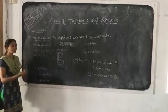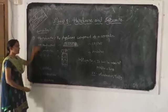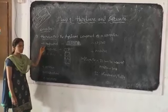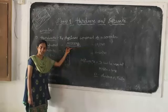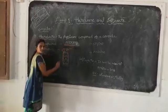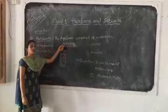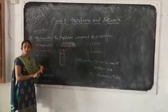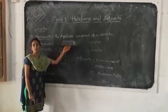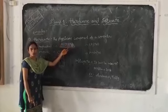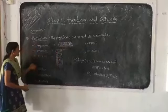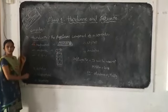The first one, keyboard. The keyboard looks like this. In this keyboard, different types of keys will be there. Here alphabets, numbers, symbols. These types of symbols will be there. By using this keyboard, you can give the input to the computer.